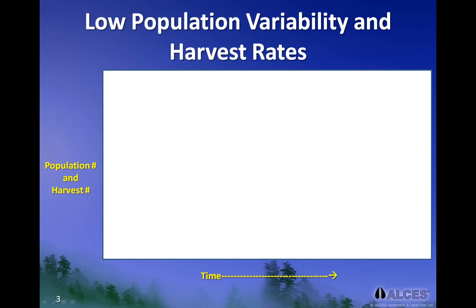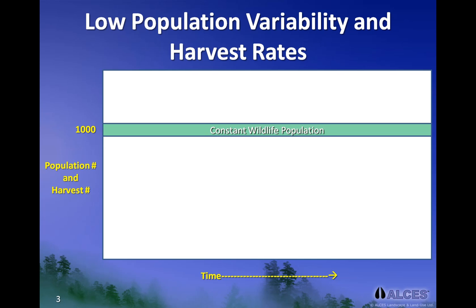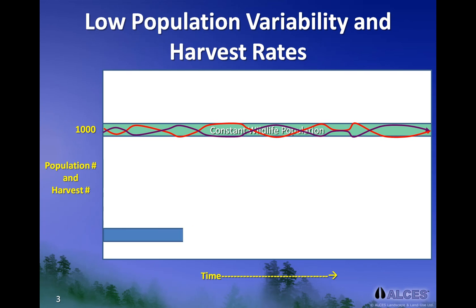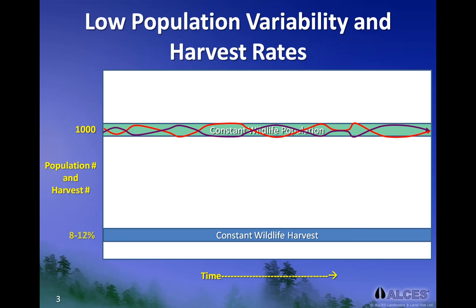In these next two slides, we return to the general theme of population variability and its implications to overall harvest rates. Let's consider a hypothetical population where the habitat can support around 1,000 animals. If we assume that environmental conditions associated with climate and landscape are relatively constant and stable, we would expect that the population would also exhibit relatively small changes in abundance from one year to the next. Notice that the green band showing the range of variation is relatively narrow. If we want to achieve a constant harvest from populations with low variability, we can often set the harvest rate at a fairly high rate, shown here at 8-12%, because in any given year at the prescribed rate the population is large enough to sustain the harvest.